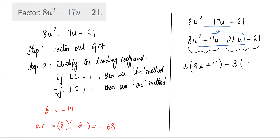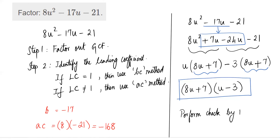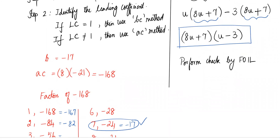Factor out (8u + 7): what remains is u from the first group and -3 from the second group, giving (8u + 7)(u - 3). That is the completely factored form. Remember to pull out the minus carefully — negative 3 times 8u is negative 24u, and negative 3 times negative 7 would give positive 21, so check signs carefully. As always, perform a check by using the FOIL method. With that, we've come to the end of 7.3. I hope you enjoyed it and I look forward to the next video.